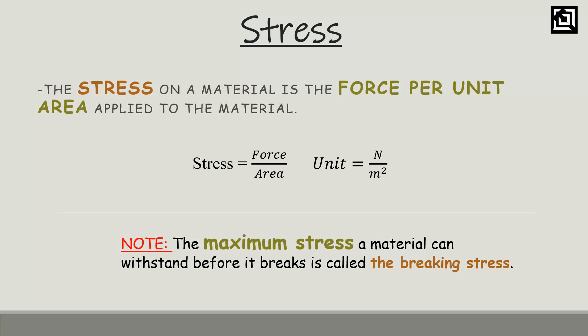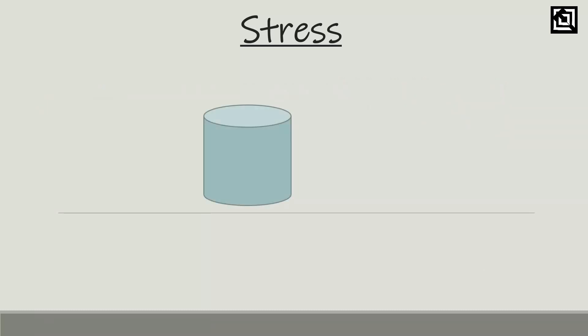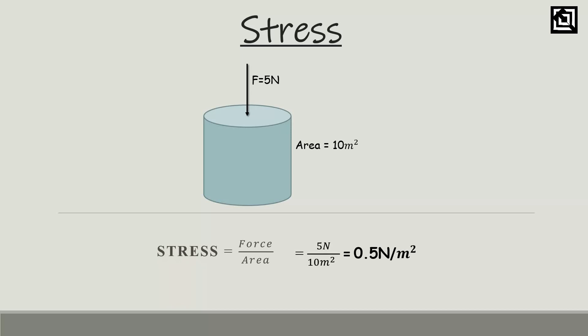If we apply a force to the material and the stress in the material reaches the breaking stress, the material will fail. For example, if we apply a force to a cylinder of 5 Newtons with an area of 10 meter square, stress equals force divided by area: 5 divided by 10 gives 0.5 Newton per meter square. This is the stress.